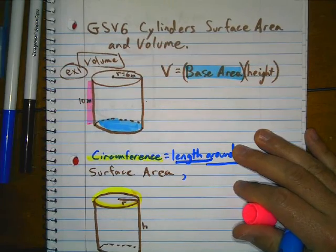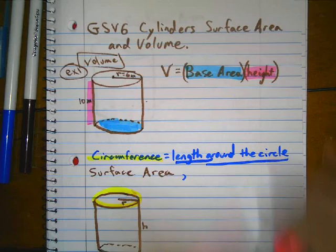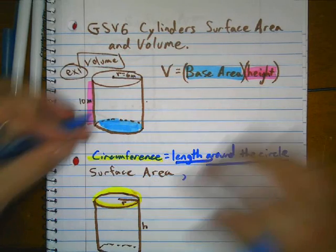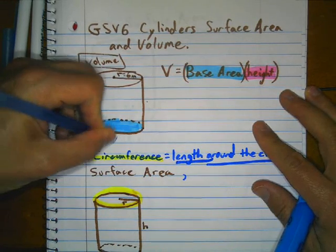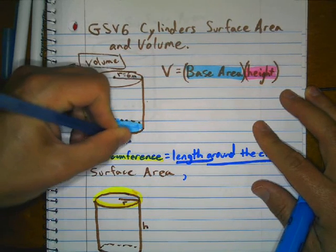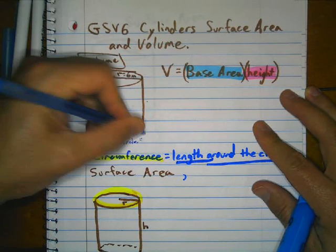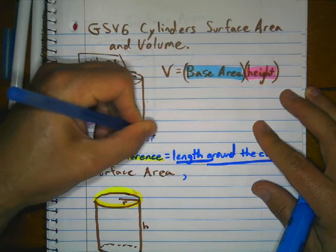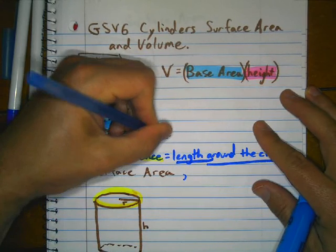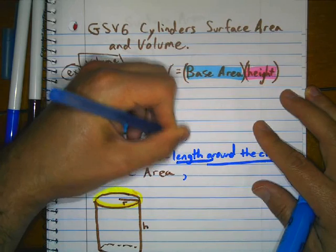In this example, the height is 10, and we need to figure out the base area. The base area — the area of the circle — is pi r squared. The radius is 6, so it's pi times 6 squared, which gives us 36 pi.